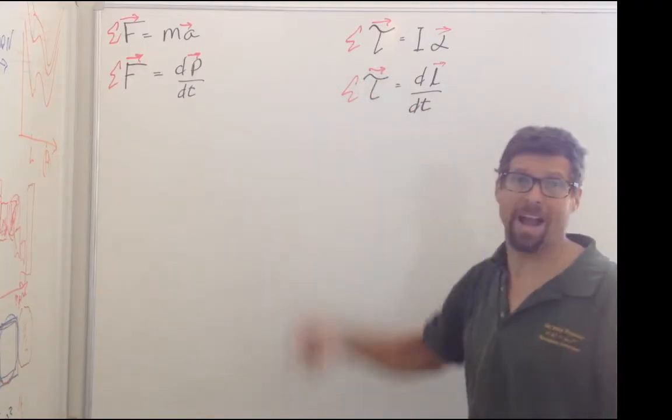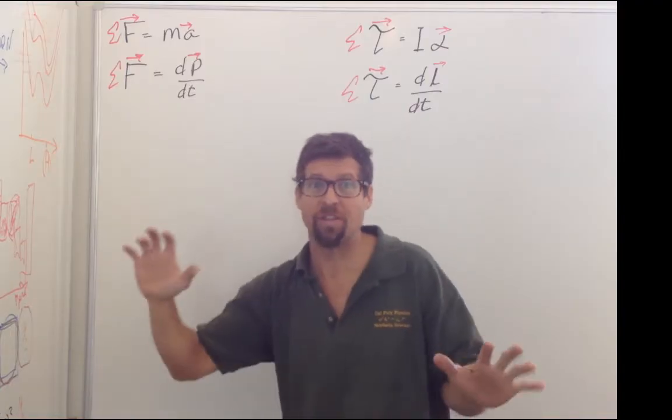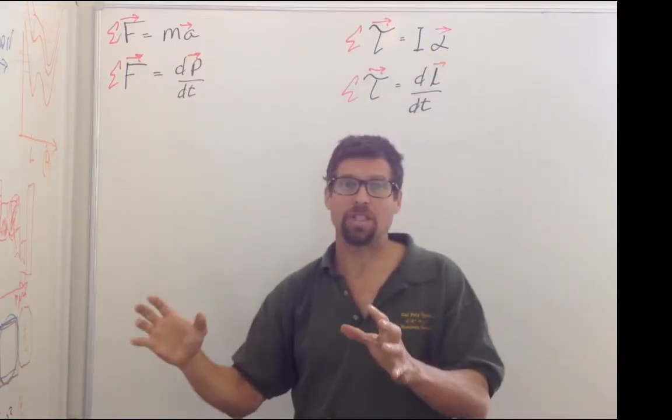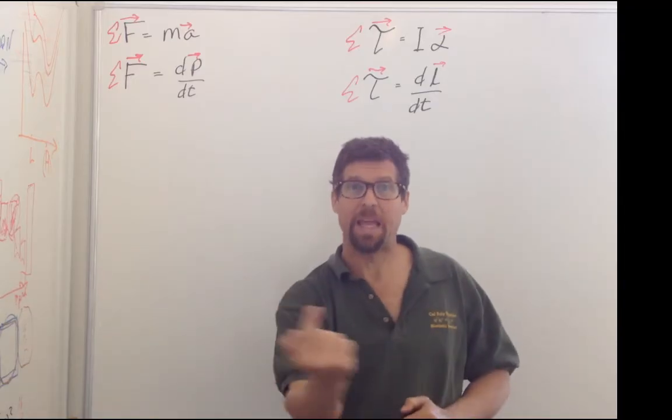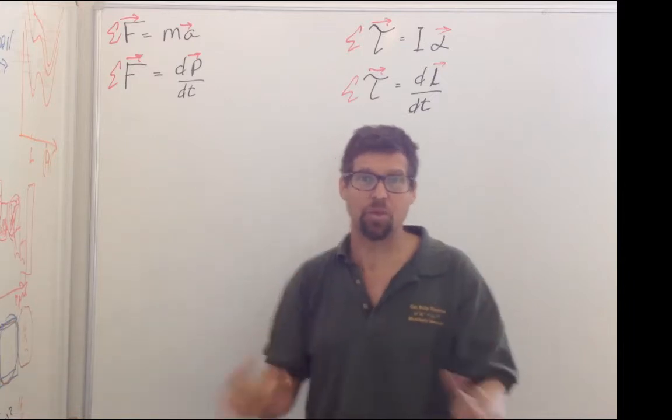And it would follow if this equation is true that if there is no torque on a system like in space or like on a frictionless surface of ice, that there would be no angular acceleration, that things would spin at the exact same rate. But we see that is just not true.